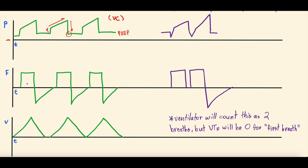The flow follows suit: you get an increase in flow when pressure is being delivered, it plateaus, then decreases — still positive flow going in. Then you get negative flow as air flows back out of the lungs to the ventilator. The volume scalar shows volume going up as the breath is delivered, then returning back to zero. This is all one breath.